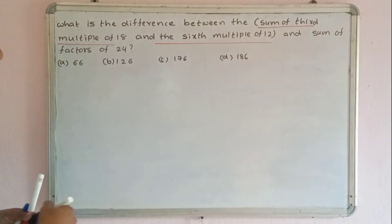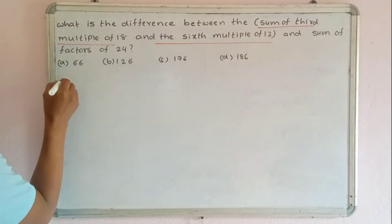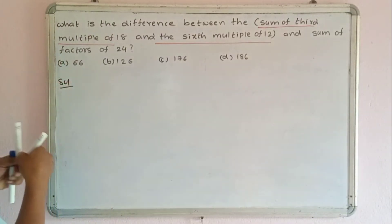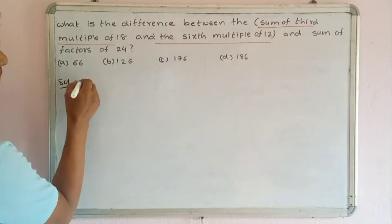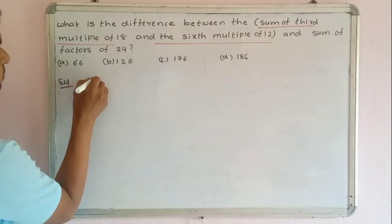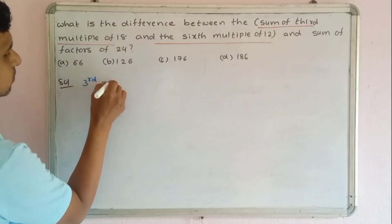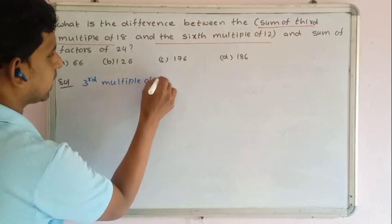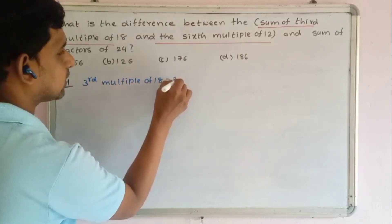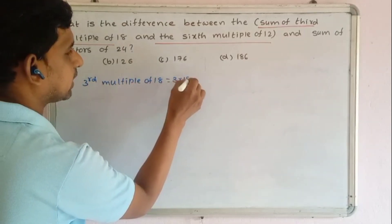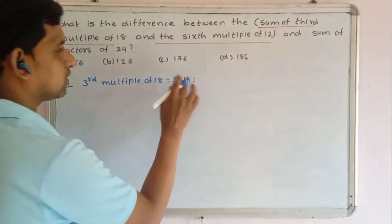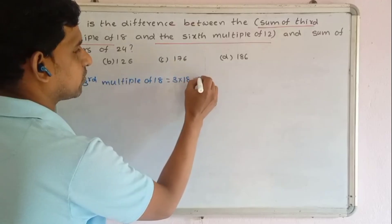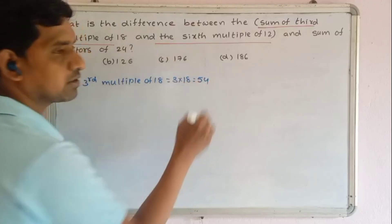Third multiple of 18: 3 into 18 equals 54. Sixth multiple of 12: 6 into 12 equals 72. So the sum equals 54 plus 72, which is 126.